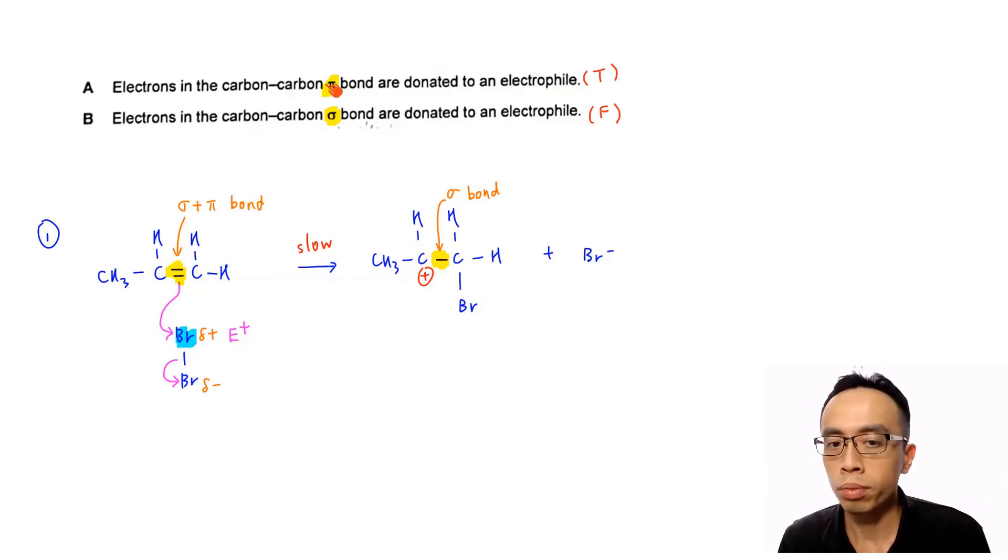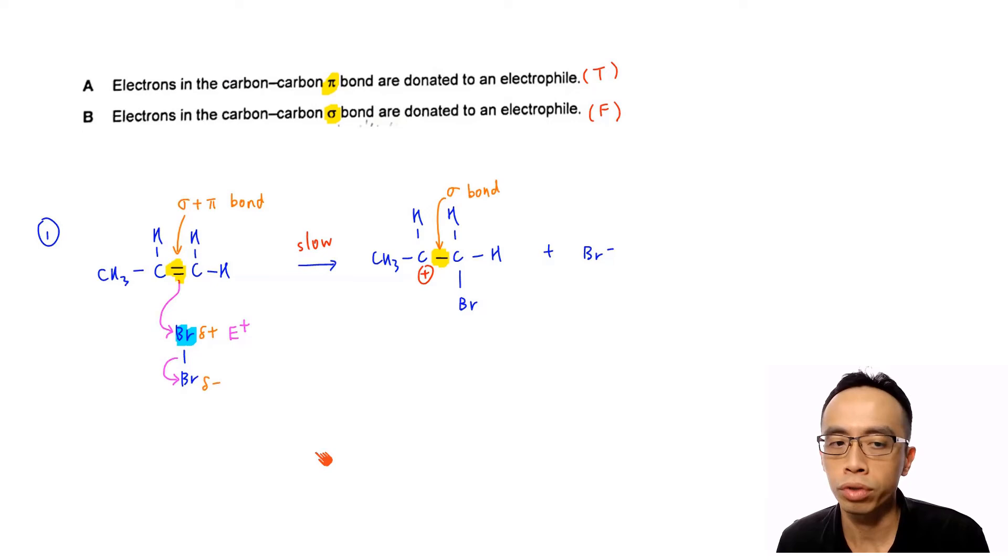So if we compare options A and B, A will be the correct answer. The pi bond will be used for donation to my electrophile. B, the sigma bond donated to an electrophile should be false. So we actually already know A most likely will be the answer for this question.